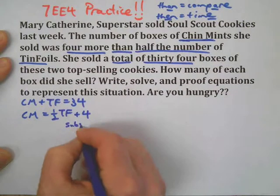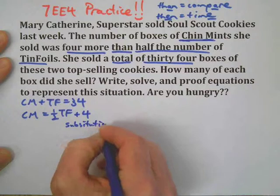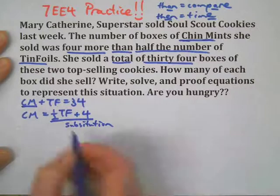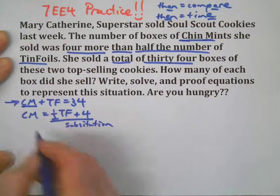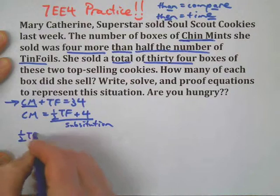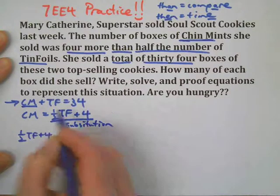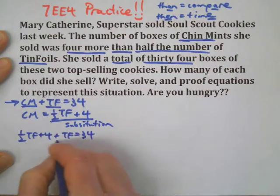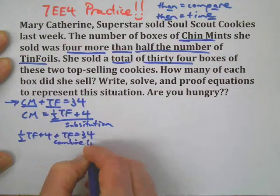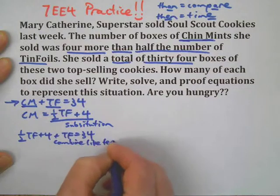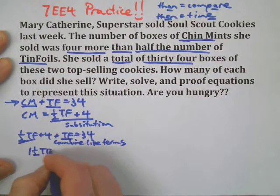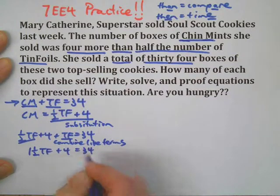Our first step, as always: substitution to get a solution. We're going to take that and put it right there and rewrite this one. So we have: one-half Tin Foils plus four, plus Tin Foils, equals 34. Then we're going to combine like terms — put all the variables together, all the numbers together. So we have one and a half Tin Foils plus four equals 34.